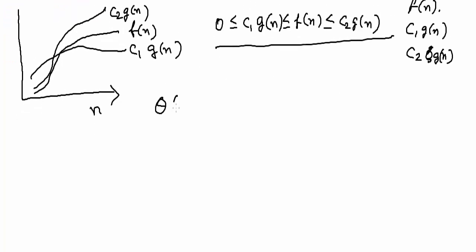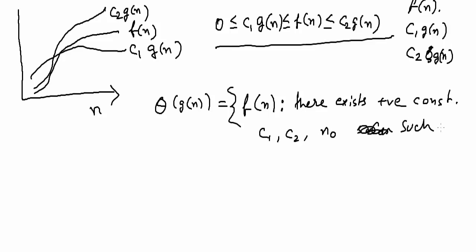Let me write something like this. Theta g(n) is what? f(n) function, there exist constants like positive constants, the constants are c1, c2, n, and n0, such that this condition is valid for all values of n0.